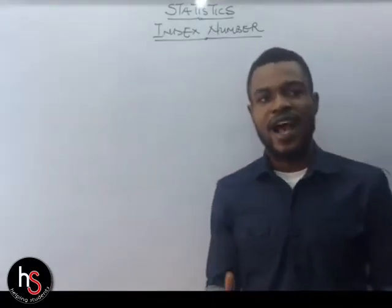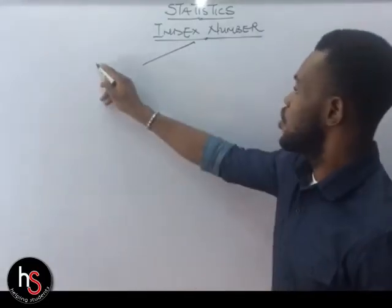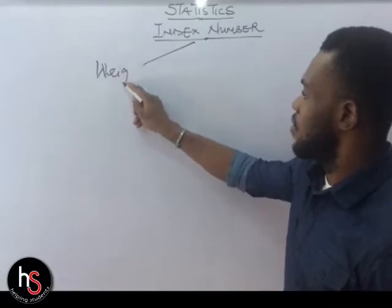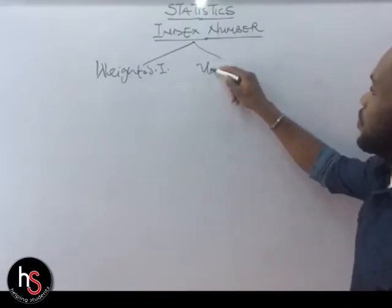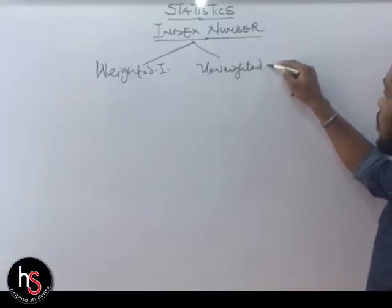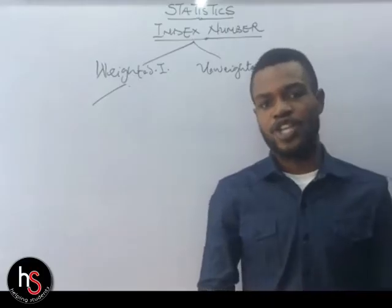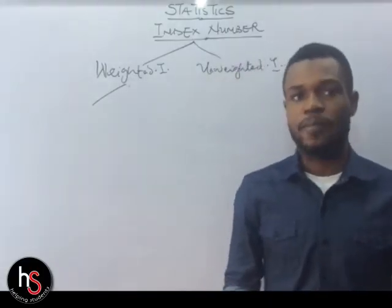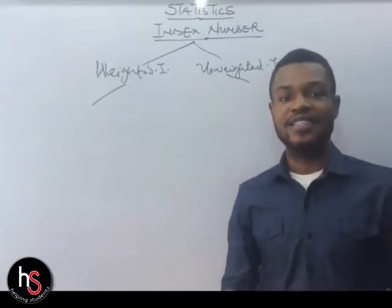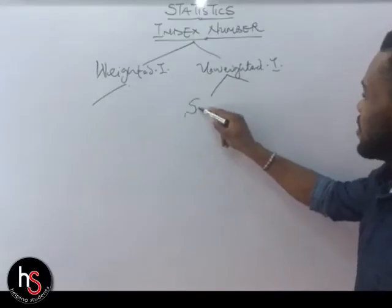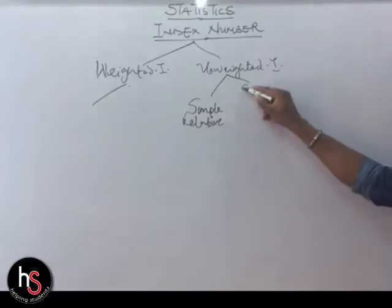This is the index number, and we'll be looking into two forms: the weighted index and the unweighted index. Under the weighted index we're going to talk about the Laspeyres, the Paasche, the Fisher's Ideal, and the Marshall-Edgeworth index number. Under the unweighted index we'll be looking at two forms: the simple relative index and the simple aggregate.